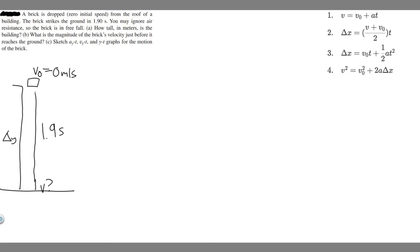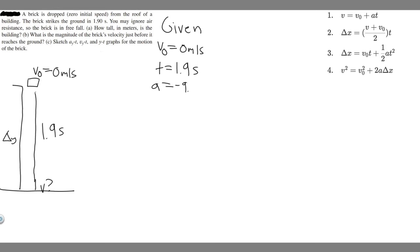Let's write down what we're given. First, the initial velocity v₀ equals zero meters per second. We're told the time it takes to hit the ground, so t equals 1.9 seconds. And while we're not directly told, it's implied since this is free fall in the y direction that acceleration is minus 9.8 meters per second squared. That's something you have to know — it's always minus 9.8 unless specified differently.